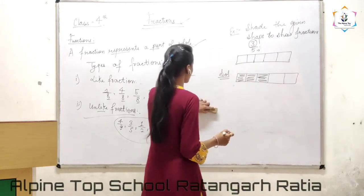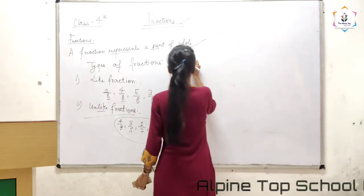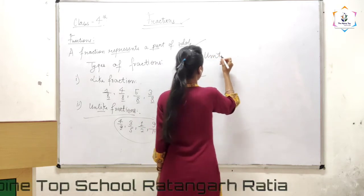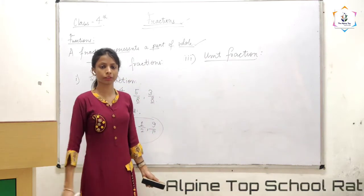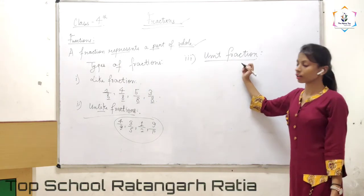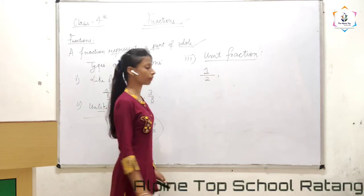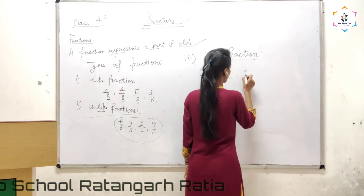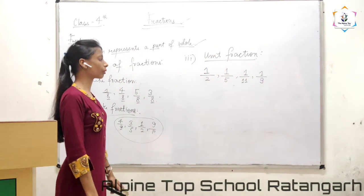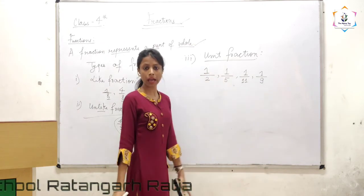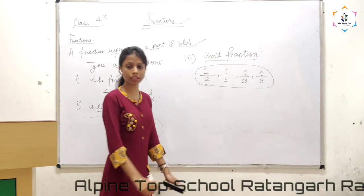Moving on to the next type — unit fractions. Unit means 1. We say those fractions are unit fractions in which the numerator value is 1. For example: 1 by 2, 1 by 5, 1 by 11, 1 by 9. As you can see, the numerator values are all 1. So we say these type of fractions are unit fractions.